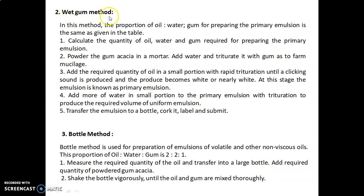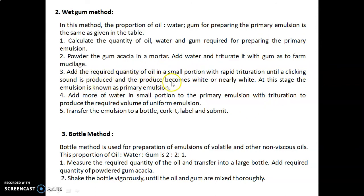In the wet gum method, the proportion of oil, water, and gum for the primary emulsion is the same as in the table. Calculate the required quantities, then powder gum acacia in a mortar, add water, and triturate to form mucilage. Add the required quantity of oil in small portions with rapid trituration until a clicking sound is produced and the product becomes white or nearly white — this is the primary emulsion. Add more water in small portions with trituration to produce the required volume of uniform emulsion, then transfer to a bottle, cork, label, and submit.